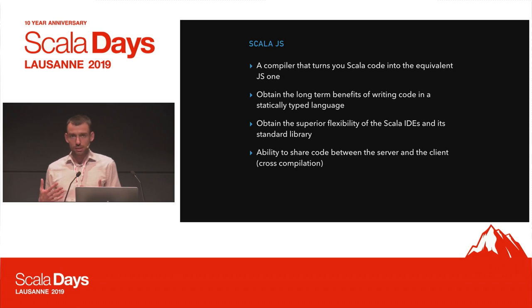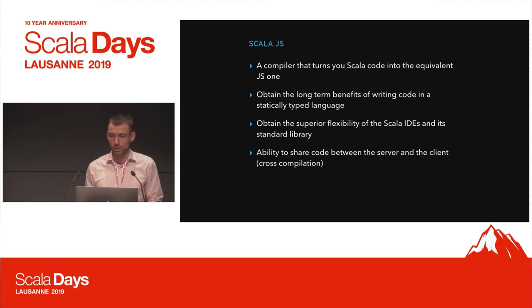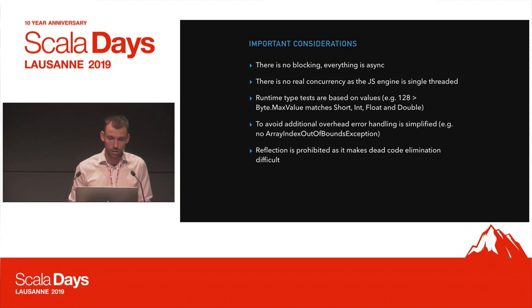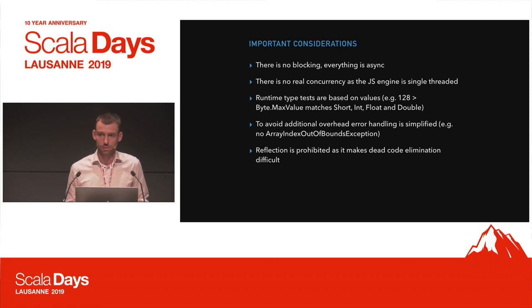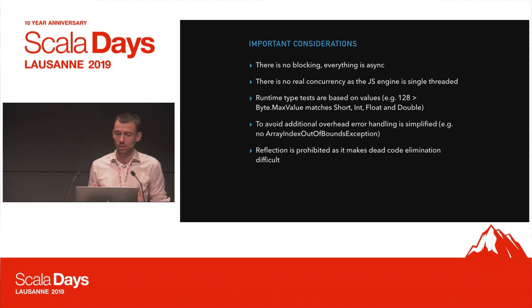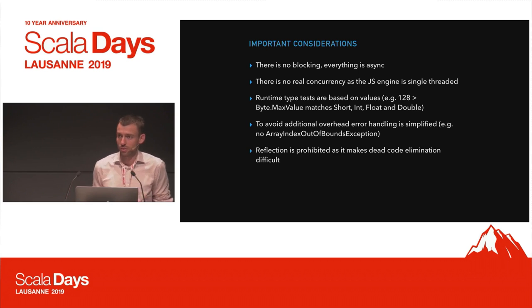Probably the biggest selling point is that you can share code between the server and the client through cross-compilation. Some things to consider when writing Scala code compiled with Scala.js: there shouldn't really be any blocking — everything is async — and there is no real concurrency since the JS engine is pretty much single-threaded.